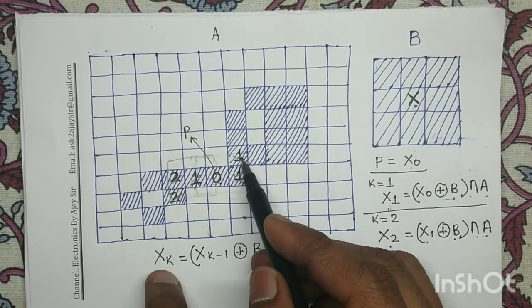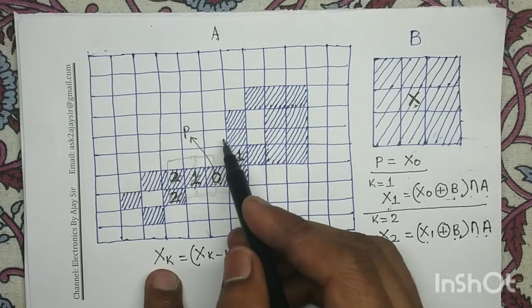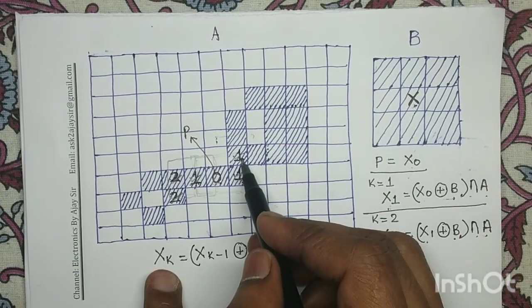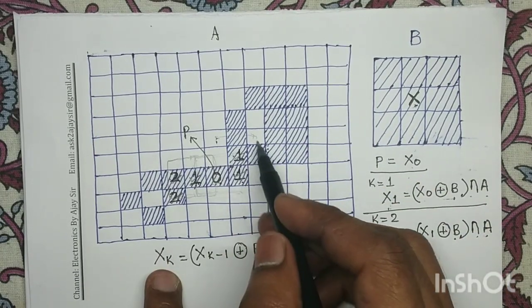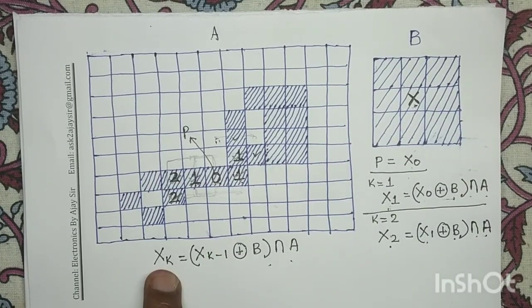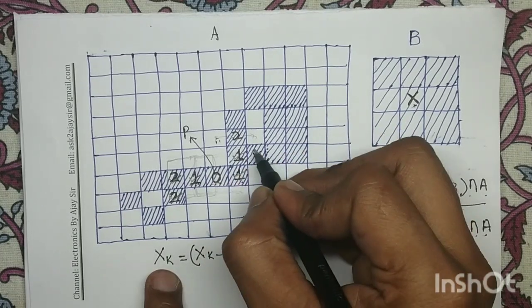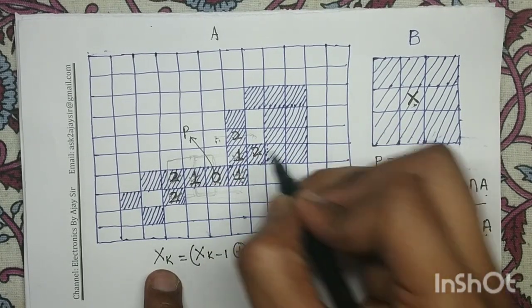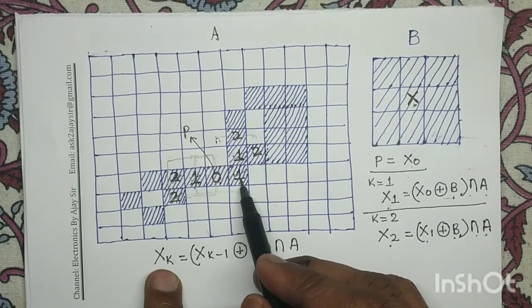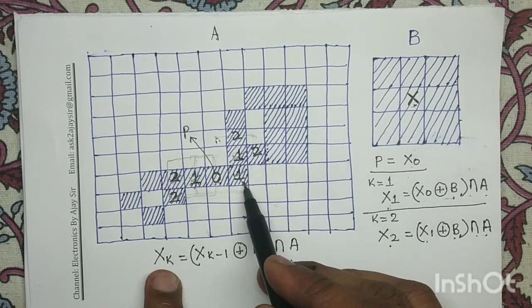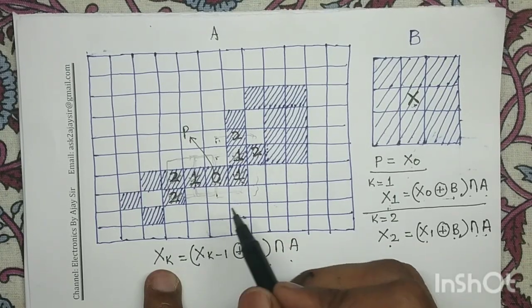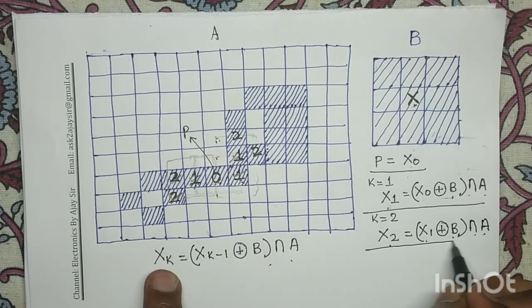Similarly, repeating the operation for the other x_1 points: performing the dilation with structuring element B and targeting the eight neighborhood — only this pixel and this pixel satisfy the intersection criteria and will be part of x_2, represented with indexing 2. For the remaining x_1 point, the dilation with structuring element B and targeting its eight neighborhood adds no new pixels. So our second iteration is over.